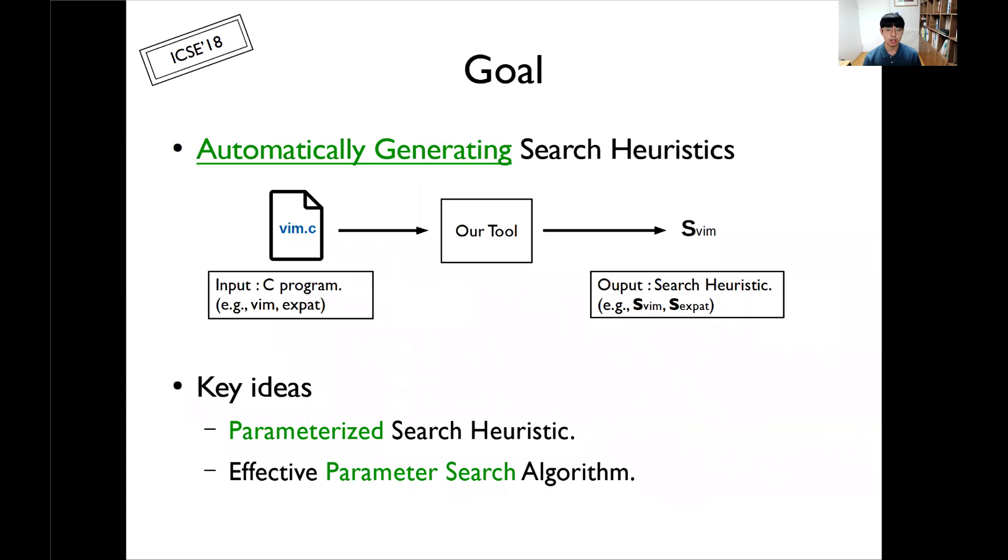In this work, the goal is to automatically generate search heuristics for a given program using machine learning techniques. Our tool takes a C program as input and automatically generates a good search heuristic for testing that program. For example, when our tool takes VIM editor, it returns an effective search heuristic for VIM. And taking XPAT then returns a good search heuristic for testing XPAT automatically. To achieve this goal, we used two key ideas. First, we parameterize a search heuristic, and we proposed a new parameter search algorithm specialized to concolic testing.